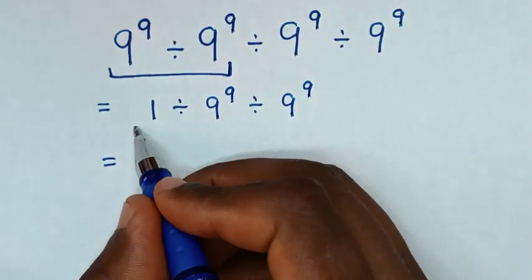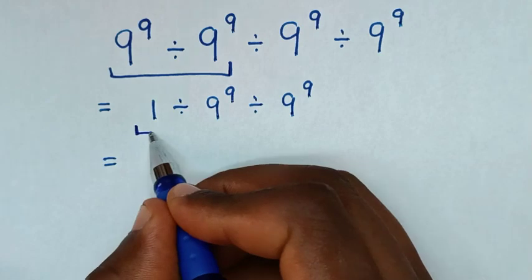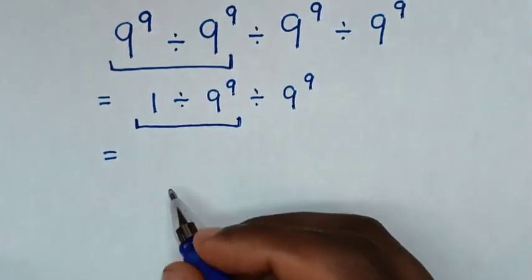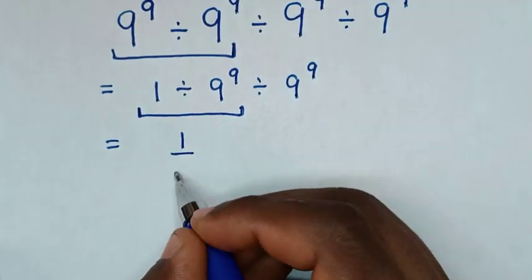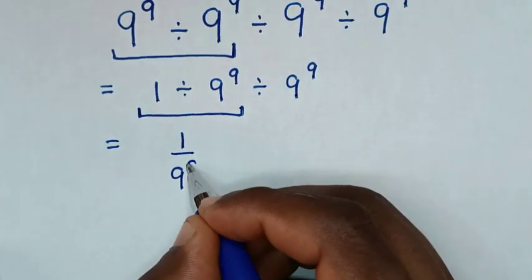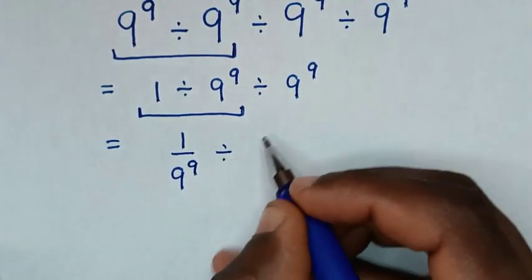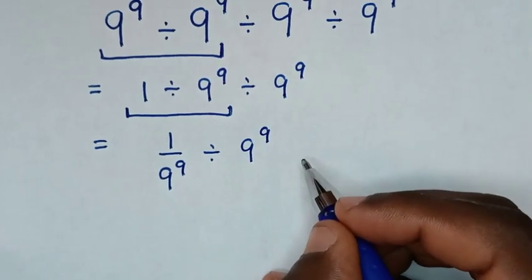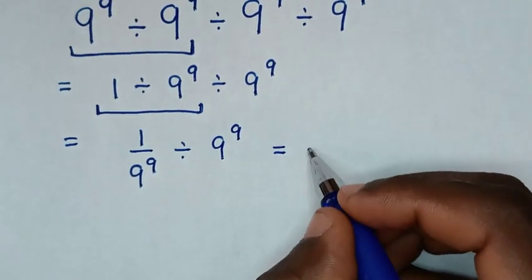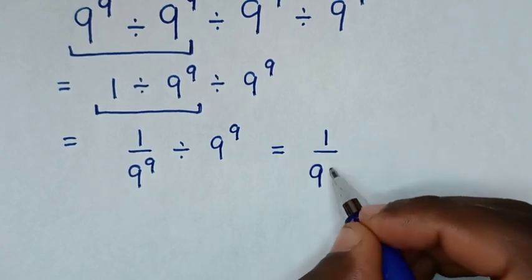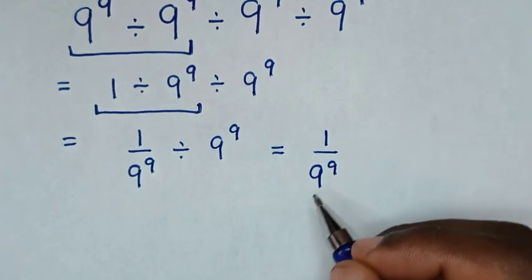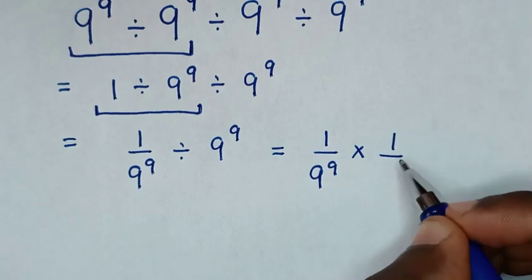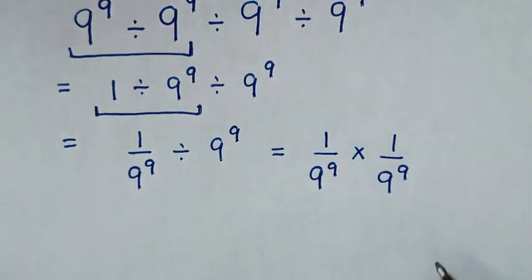Then we will start to deal again with this first division: 1 divided by 9 power 9, which is the same as 1 over 9 power 9. Then divide by 9 power 9. So it will be equal to 1 over 9 power 9, divided by 9 power 9, which is the same as times 1 over 9 power 9.